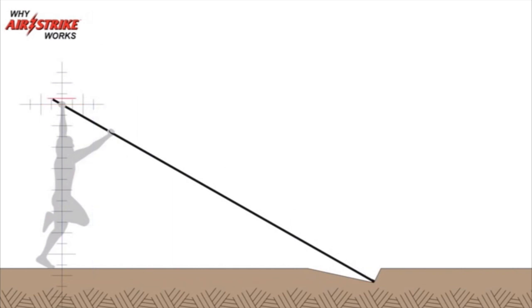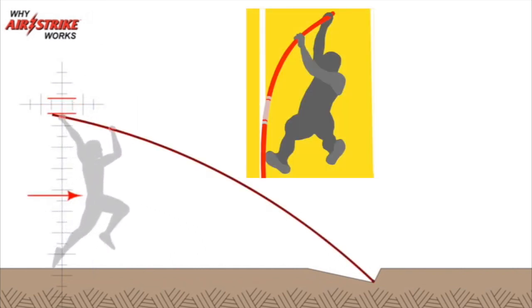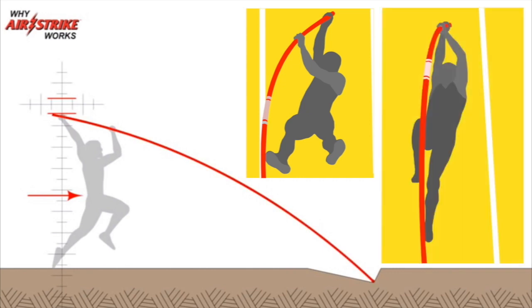Vaulters can foolishly attempt to force the bending pole forward, as traditional vaulters always have done, including world record vaulter Bubka. Or,